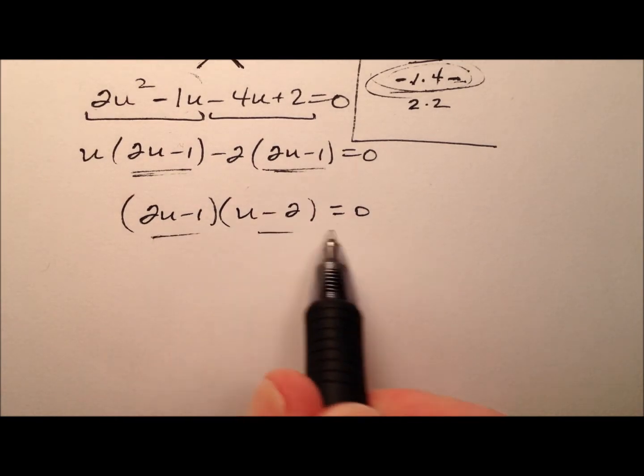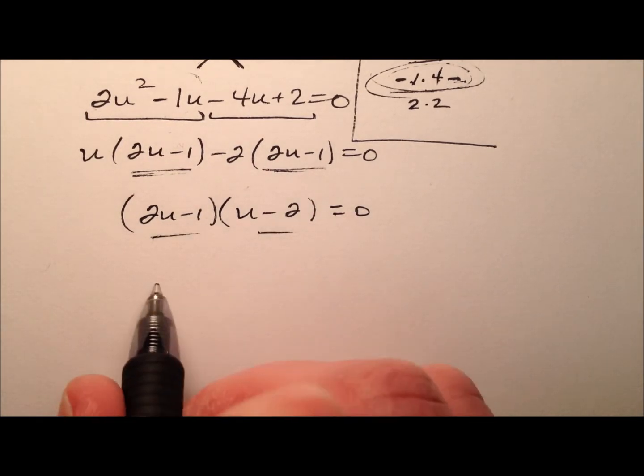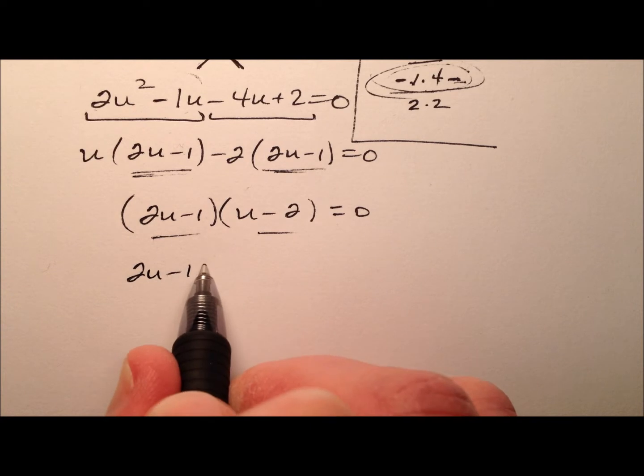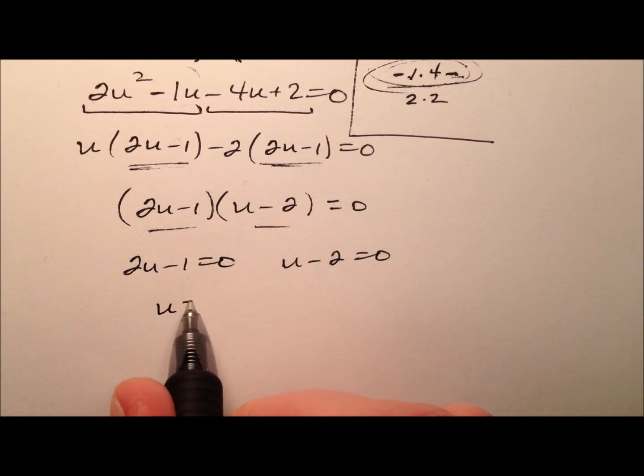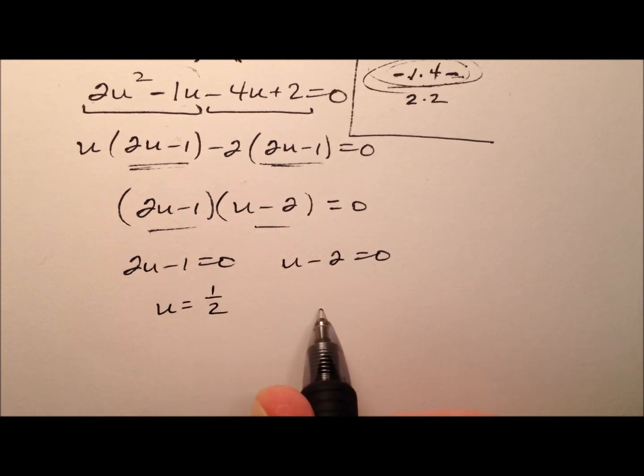When I use the zero product property, I'm going to see that 2u minus 1 equals 0 and u minus 2 equals 0. So my values for u are positive one-half and positive 2.